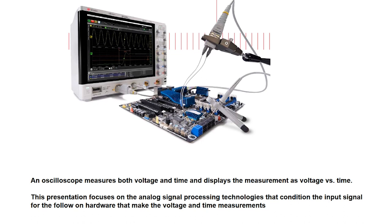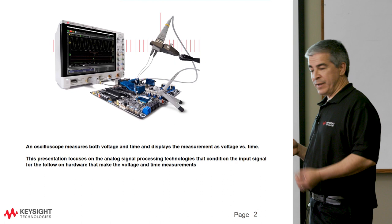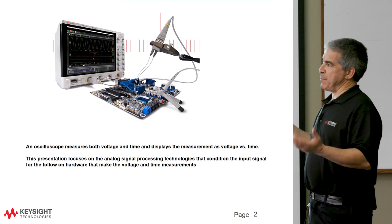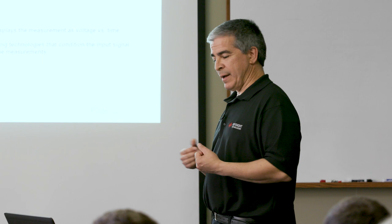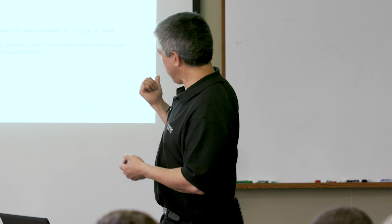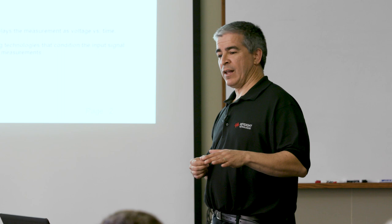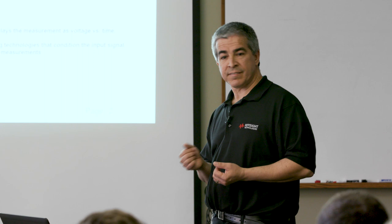And also before we do things like calculate the time for the time axis. So basically what an oscilloscope does — it measures both voltage and time and displays that on an axis as voltage versus time. We have other ways to display the signal, but that's effectively what we acquire: voltage and the time relative to when that voltage was acquired. This presentation is going to focus on the analog signal processing technology before the A-to-D sees it, and also before the time base and trigger circuitry sees it.